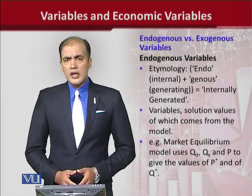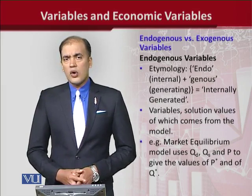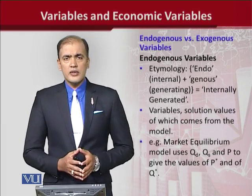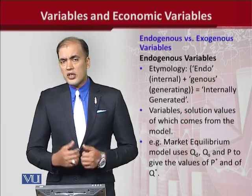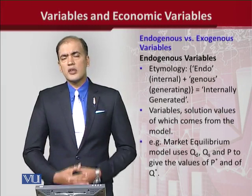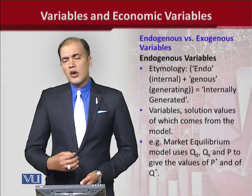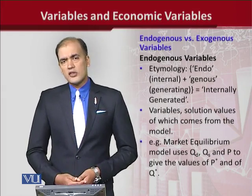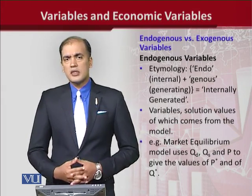When we look at variables from another angle, there are two types. If we can find the value of a variable using the equations or model we are given, then it is an endogenous variable — because 'endo' means internal and 'genus' means to produce. Its value is generated from inside the model. However, if the values cannot be found and are already given, then exogenous variable is the suitable term — its value is given to us and we are not calculating it using the given equations.